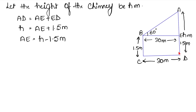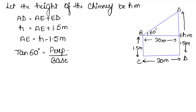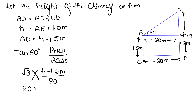We need a formula involving base and perpendicular. Since the angle of elevation is 60 degrees, we use tan 60°. tan 60° = perpendicular / base. From the table, tan 60° = √3. The perpendicular is AE = h − 1.5, and the base is 30. So: √3 = (h − 1.5) / 30.